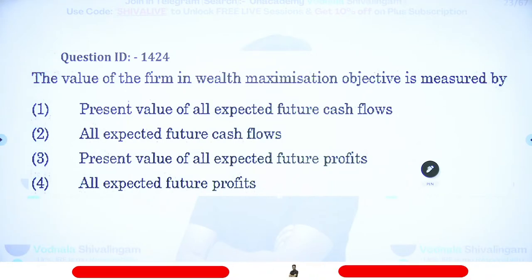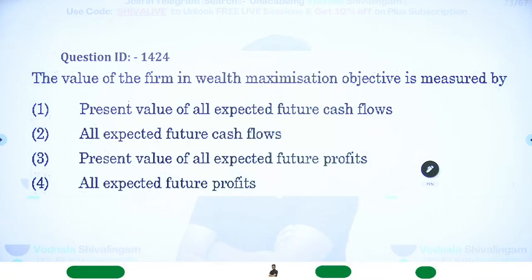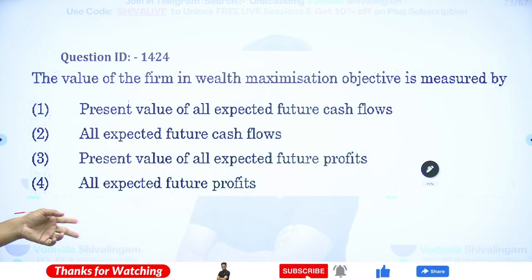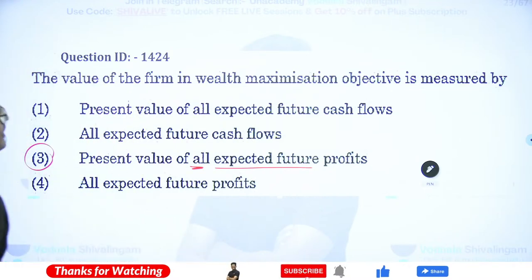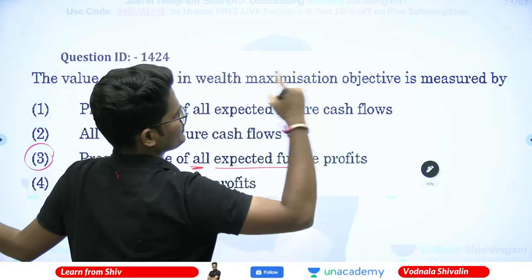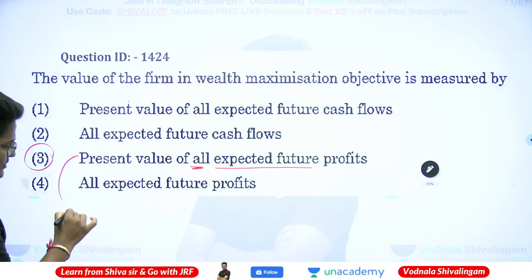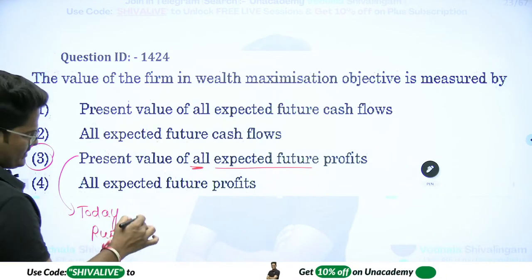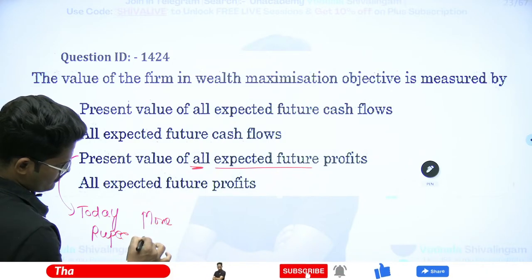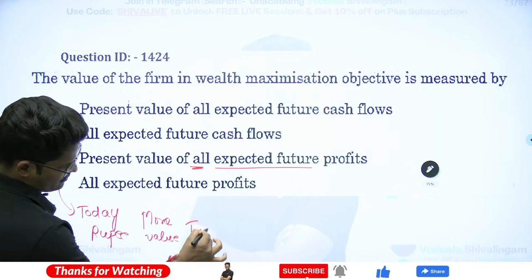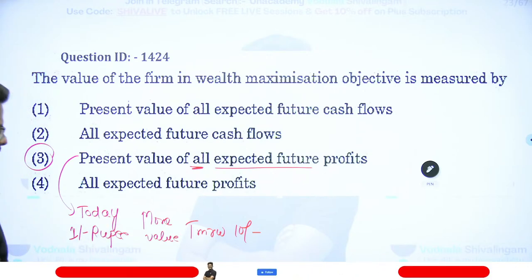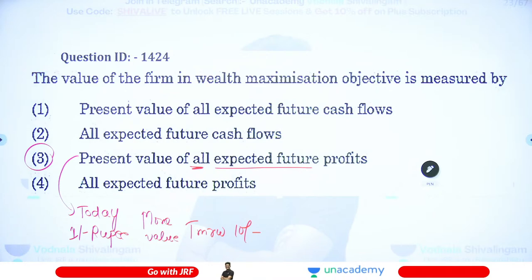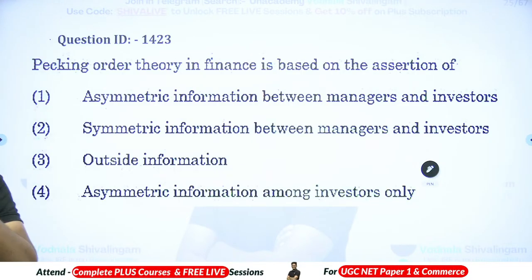Question 8: The value of the firm in wealth maximization objective is measured by — answer is option C — present value of all expected future profits. Wealth maximization is the present value of all expected future profits because today's rupee has more value than tomorrow's 10 rupees. Present value is used to identify your wealth based on expected future profits, and time value of money operates here.